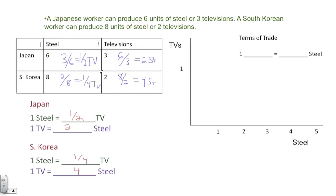So South Korea has a comparative advantage in the production of steel as the cost of TVs is less for them. Now, Japan here has a comparative advantage in the production of televisions. We always want the country to produce the product for which they have less opportunity cost.